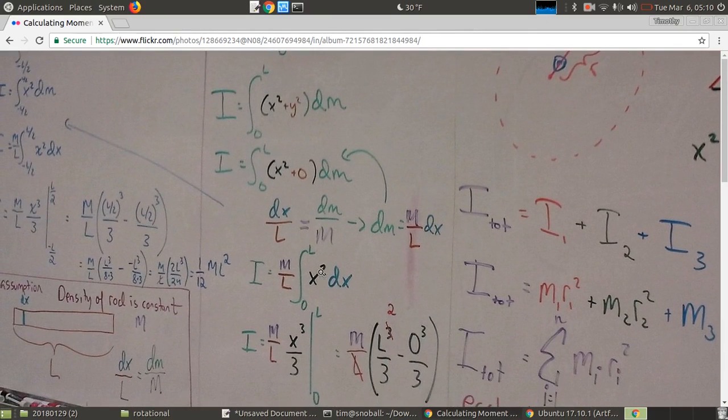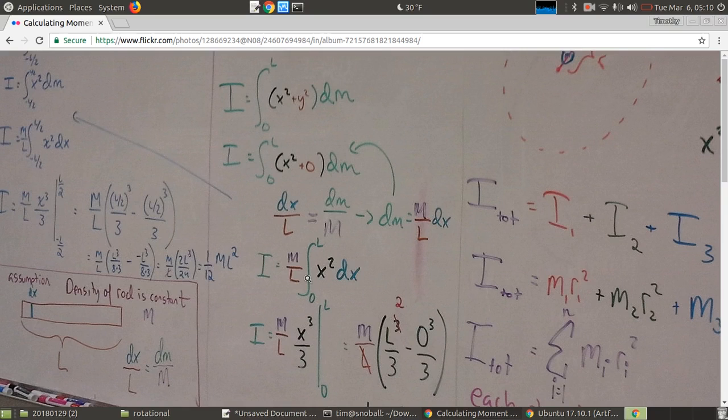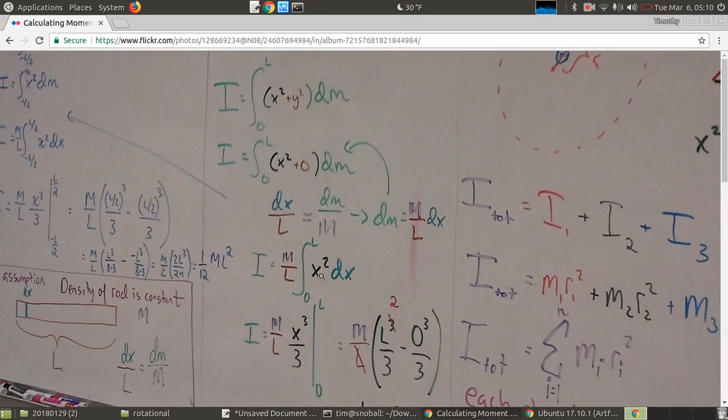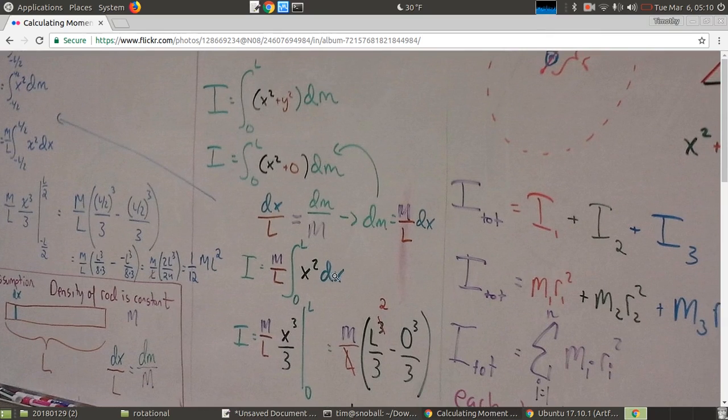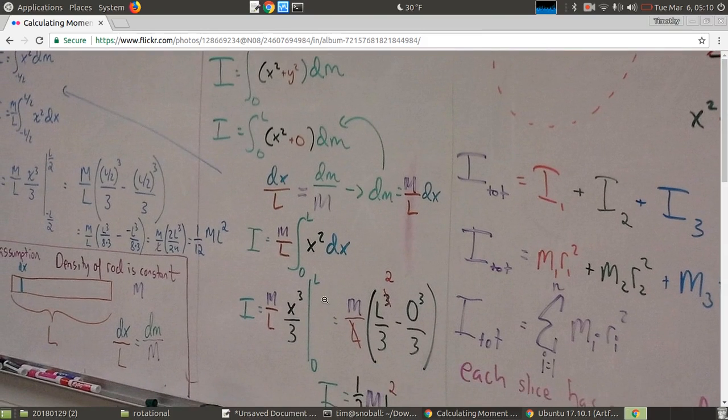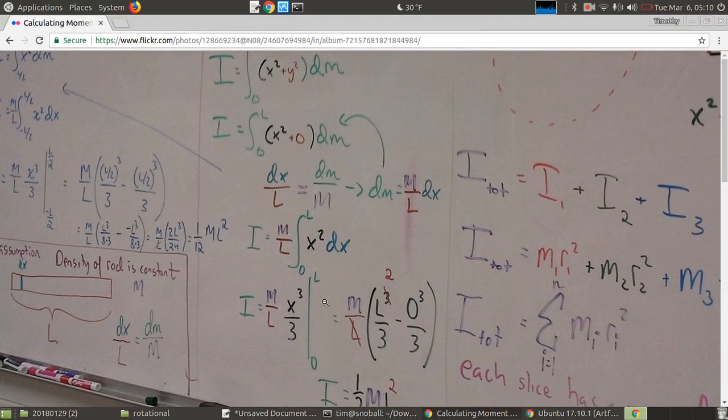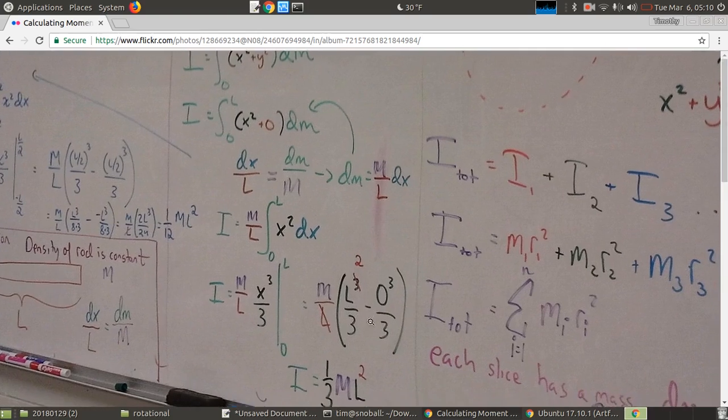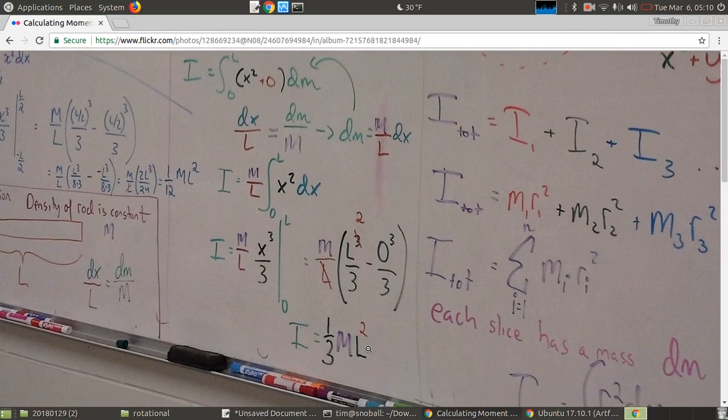So now the integral becomes this. m and l are constants, I pull them out. We've got our x squared from before, but now we've got dx. And this is something that we can integrate. So we just do a definite integral from 0 to l. We plug l into this expression. We subtract the same expression with 0 in it. And we end up with a moment of inertia. And that's for a stick that you're twirling from its end.